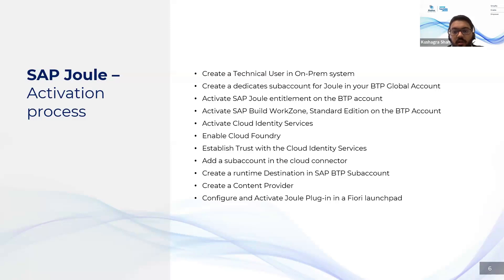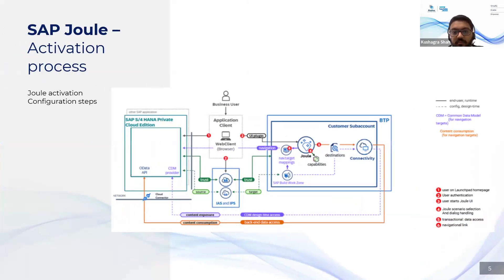That is how the connectivity works between Joule, the BTP account, and your S/4 HANA Private Cloud system. The technical user handles the cloud connector and data services calls. The trust connection is established via IAS and IPS. The user will access a web application — specifically the Fiori Launchpad — where there will be a UI plugin for Joule, with back-end connectivity to the Private Cloud Edition, ensuring data integrity and continuous system access.